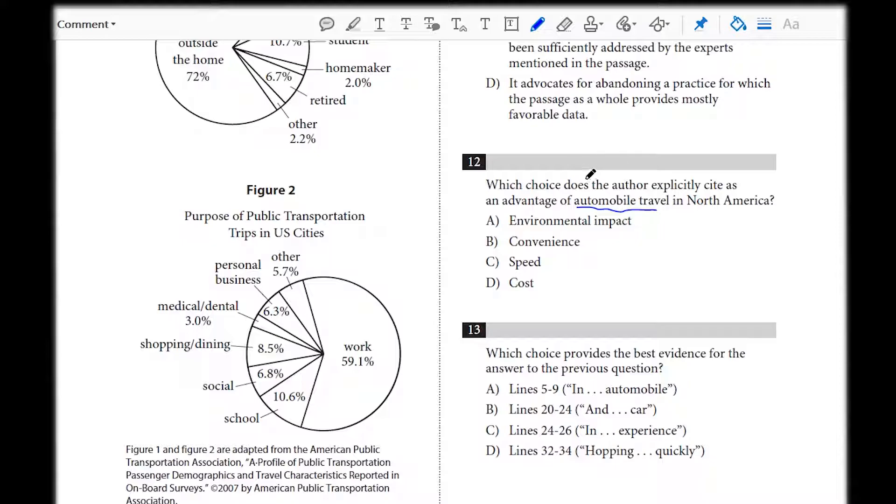The second thing we could do is go back and read the entire passage and look for explicit mention of a benefit of automobile travel. That doesn't seem viable. We don't have time to do that. The third thing we could do, and probably the most applicable to other sections and other questions, is use question 13.